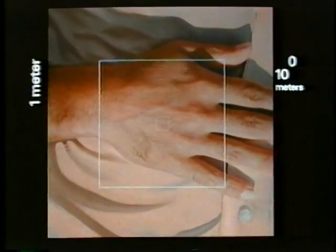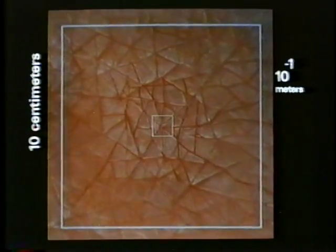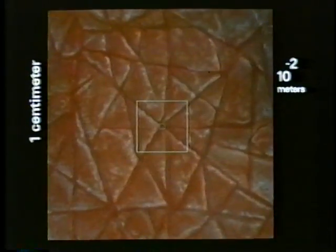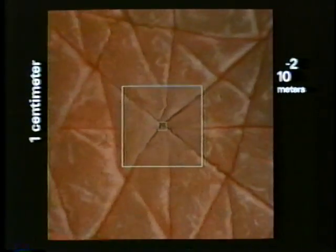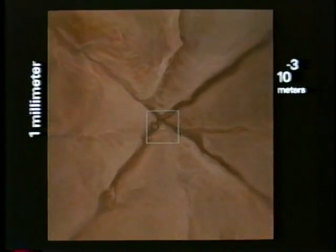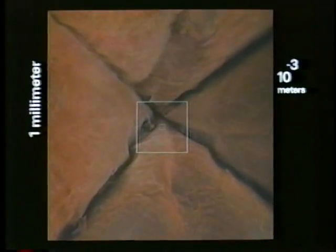Now we reduce the distance to our final destination by 90% every ten seconds. Each step much smaller than the one before. At ten to the minus two, one one-hundredth of a meter, one centimeter, we approach the surface of the hand. In a few seconds we've been entering the skin.